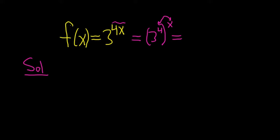3 to the fourth is 3 squared times 3 squared, which is 9 times 9, which is 81. So this is 81 to the x. Our original function is actually f(x) = 81^x.